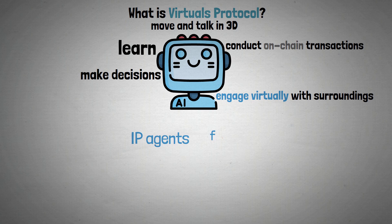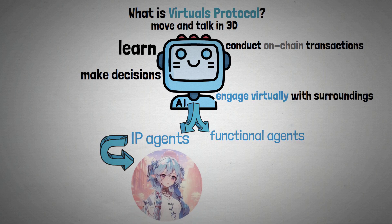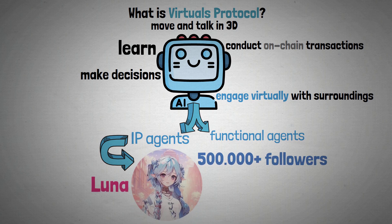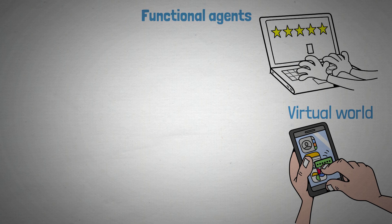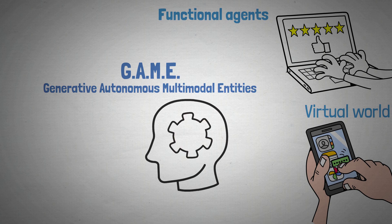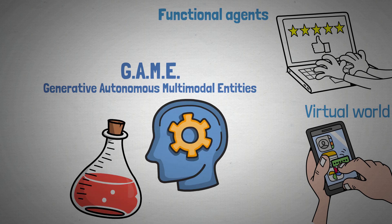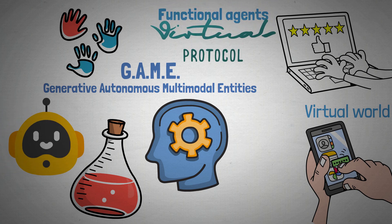IP agents and functional agents are the two main categories. One of the platform's original IP agents, Luna, has gained more than 500,000 TikTok followers. Functional agents are intended to improve the user experience by facilitating smooth interaction with the virtual world. GAME — Generative Autonomous Multi-model Entities — a framework that enables developers to access and experiment with AI agents, is a great illustration of a functional agent on Virtuals.